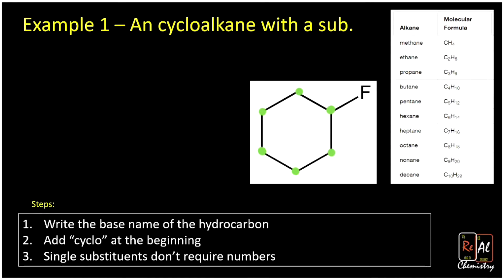So we're just going to write hexane — that is the base name when you have six carbons. Step two, we're just going to add 'cyclo' at the front, because it's a ring. We need to use the word 'cyclo' to tell people we've got a ring here. And now we want to add the name of our substituent.